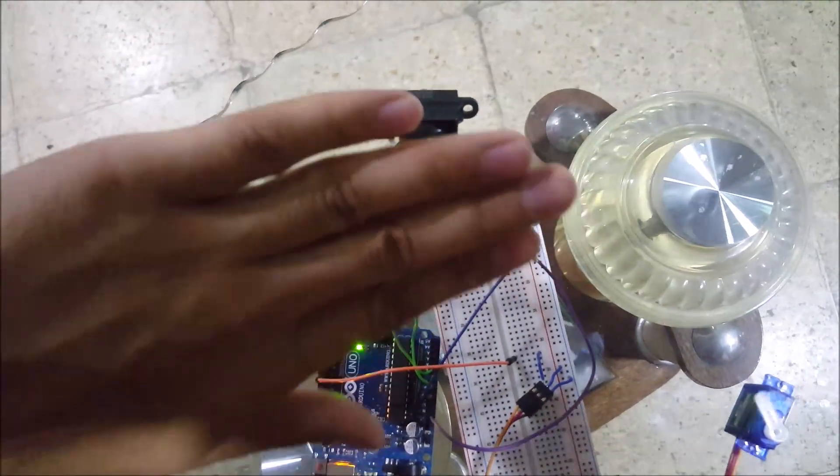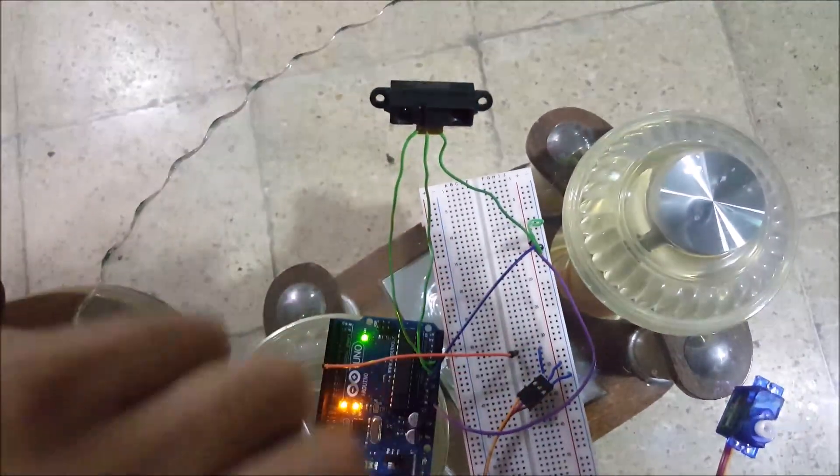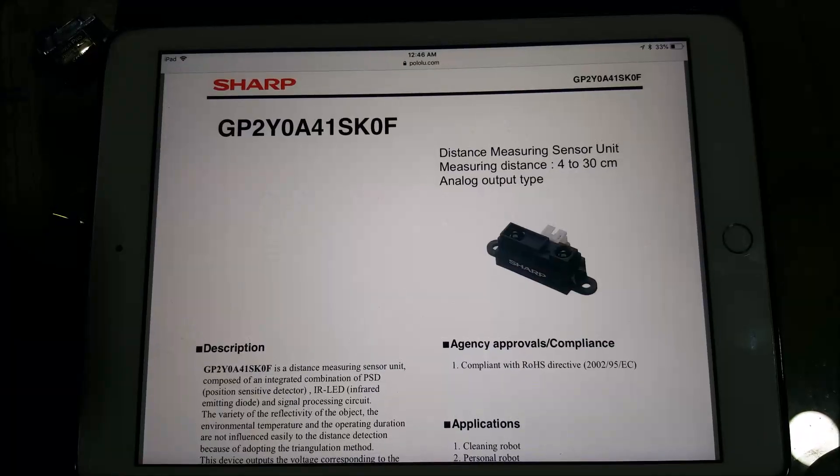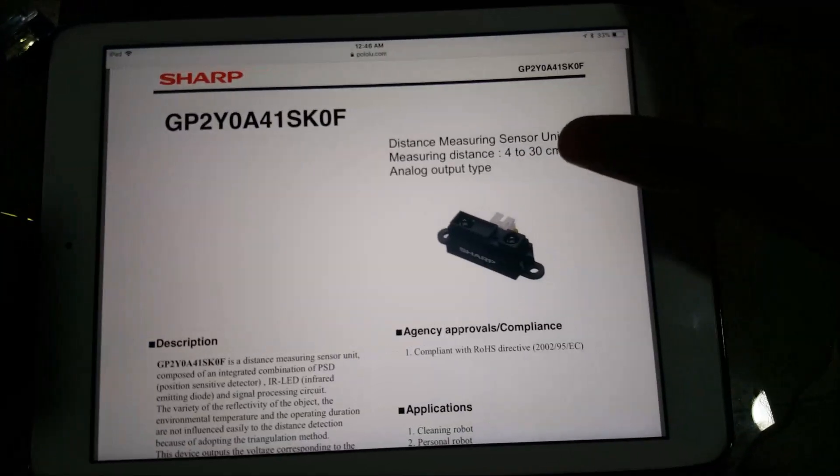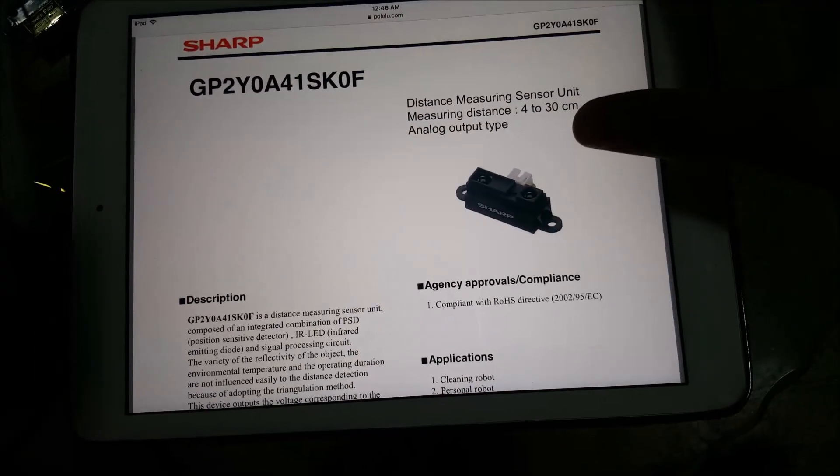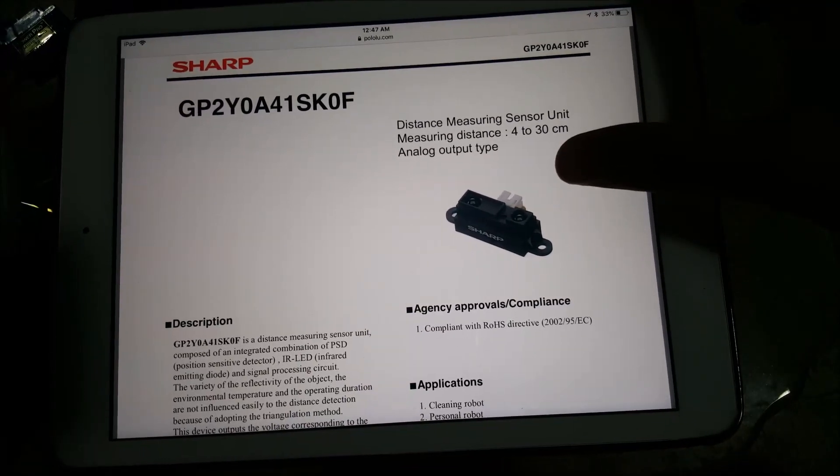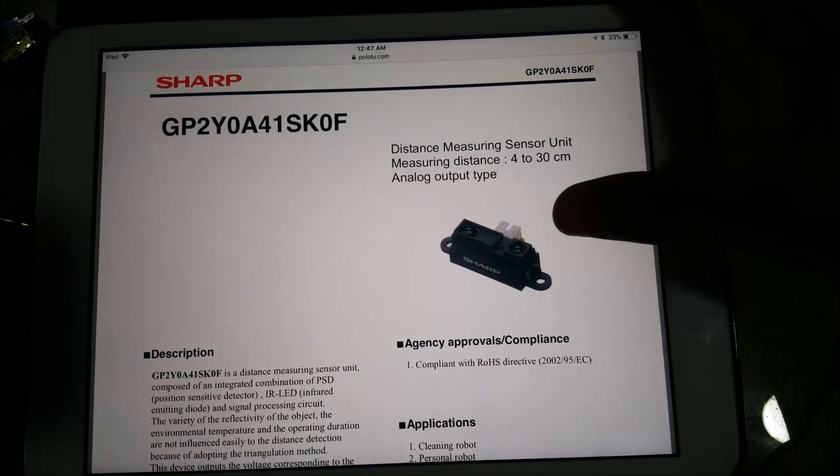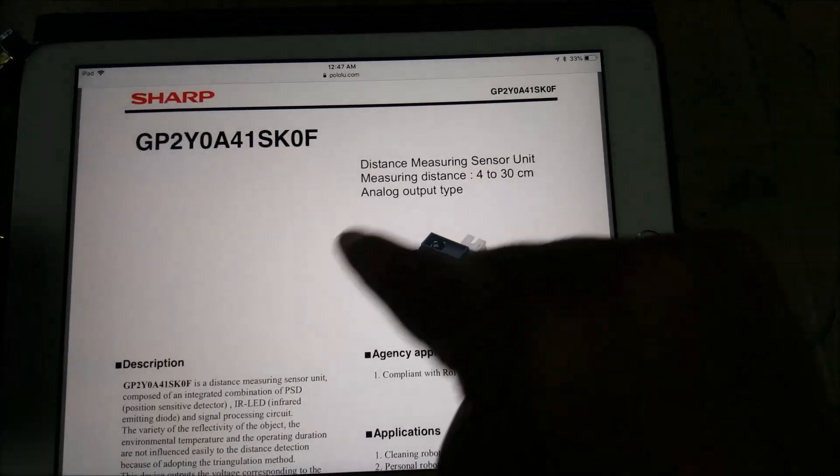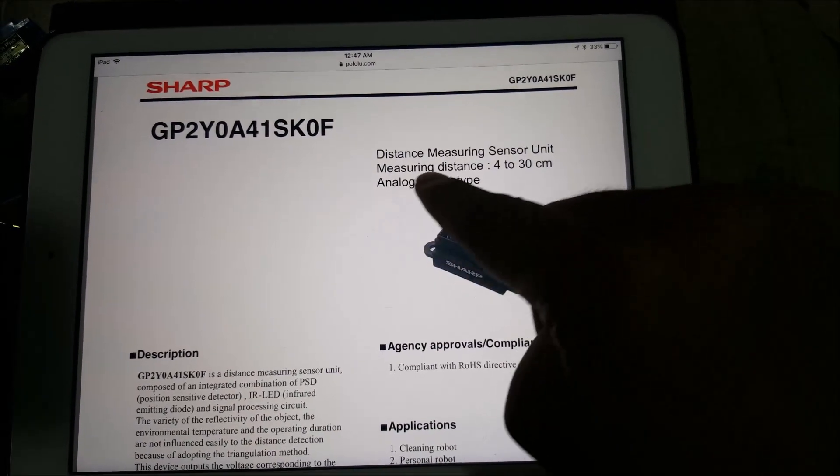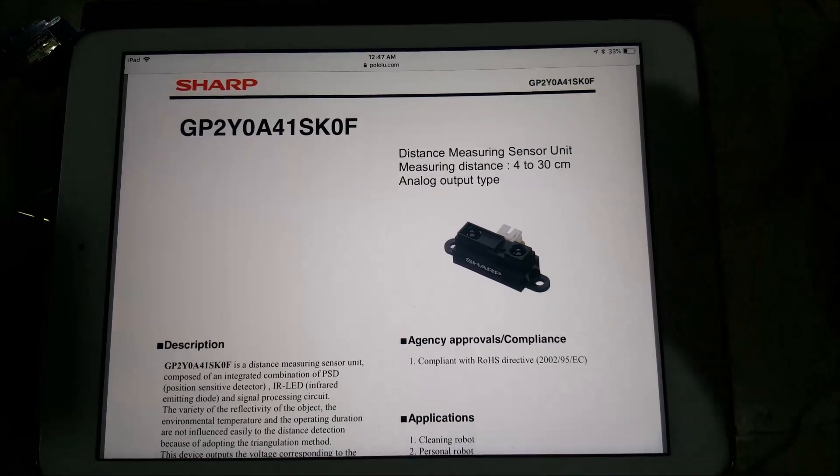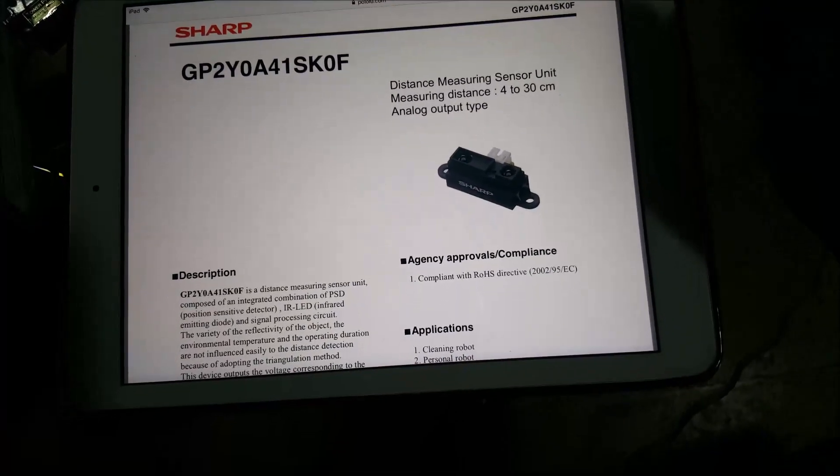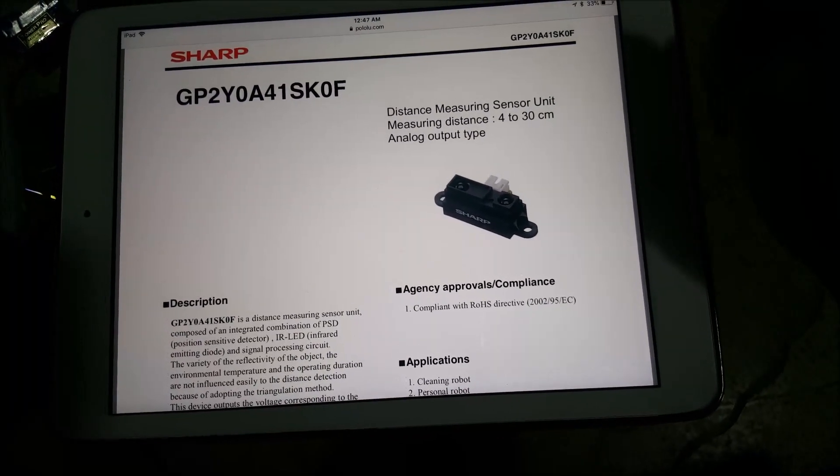Right here I pulled out the data sheet for the IR sensor. You can Google this and find the PDF online. First thing, notice here it says measuring distance starting from 4 to 30 centimeters. So basically this sensor will measure within this range. Outside this range you will get inaccurate values.